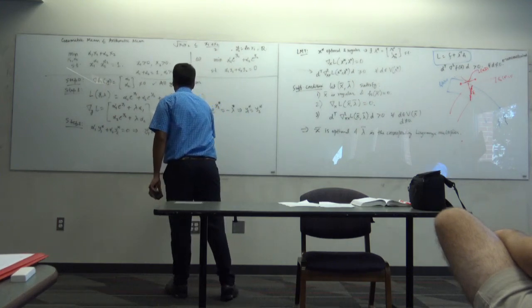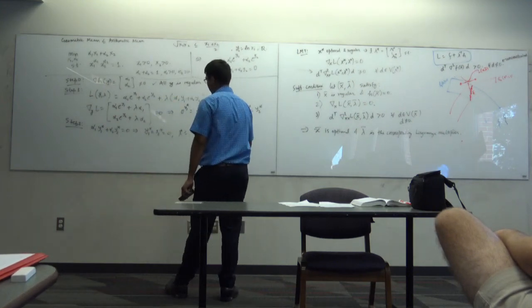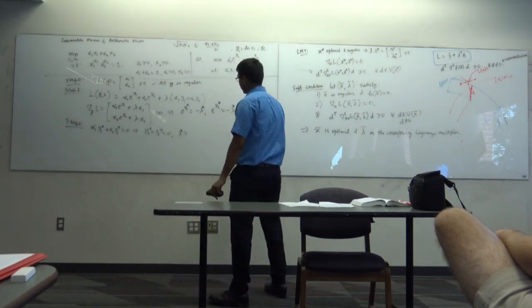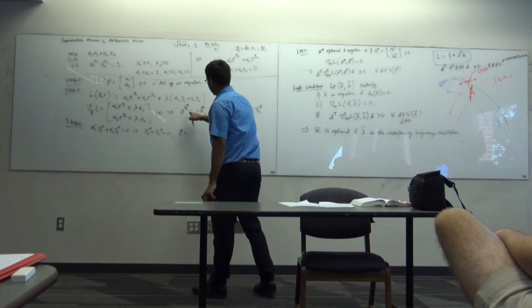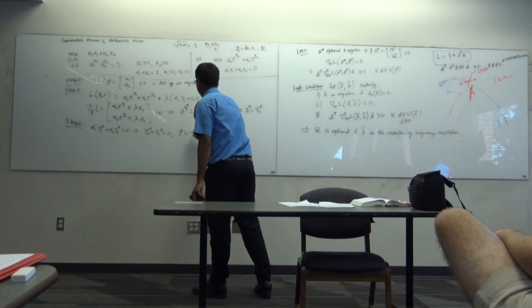Step one, formulate the Lagrangian L(y, λ). The gradient of L with respect to y is [α₁e^{y₁} + λα₁, α₂e^{y₂} + λα₂] = 0. This implies e^{y₁} = −λ/α₁ · α₁ = −λ and similarly for y₂, which gives y₁* = y₂*. I can eliminate α₁ and α₂ because they are positive. Then substituting into the constraint α₁y₁* + α₂y₂* = 0 gives y₁* = y₂* = 0, and λ* = −1.